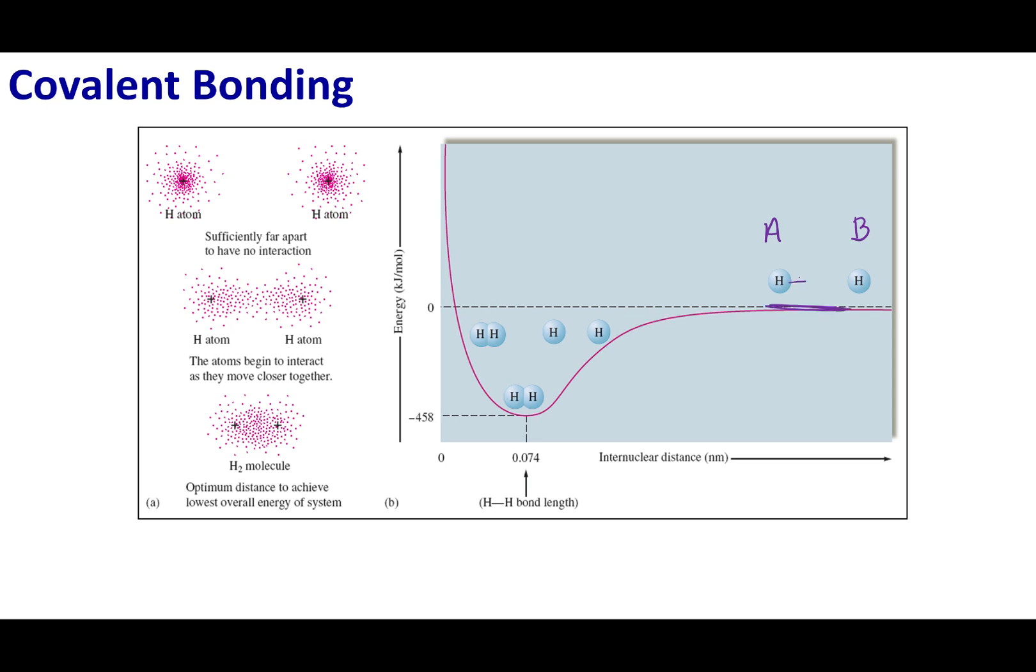What I'm going to do is bring these two atoms closer and closer together. What's going to happen is that the electron from hydrogen A is going to see the proton in hydrogen B. Remember, an electron seeing a proton is a favorable interaction. A positive and a negative want to be close together. So what happens is I get a lowering of energy of my system because now each electron can see two protons and each proton can see two electrons.